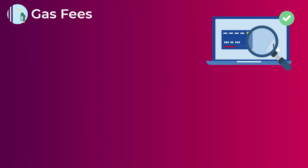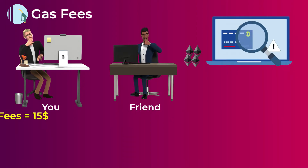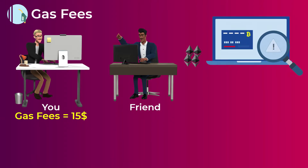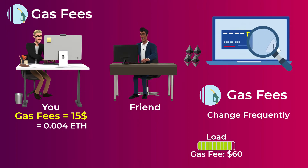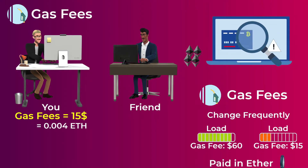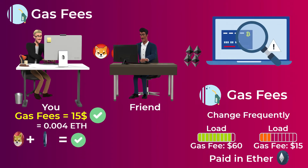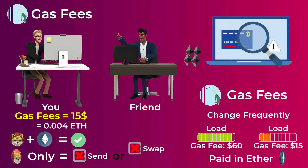This gas fee is the network's reward for validating your transaction, and it is paid in Ether. For example, if you want to send some Shiba tokens to your friend, you will pay around $15 in gas fees, equivalent to about 0.004 ETH. Keep in mind this fee changes frequently according to the load on the Ethereum network. So if you have ERC-20 tokens in your wallet but don't have any Ethereum, you won't be able to send or swap them.